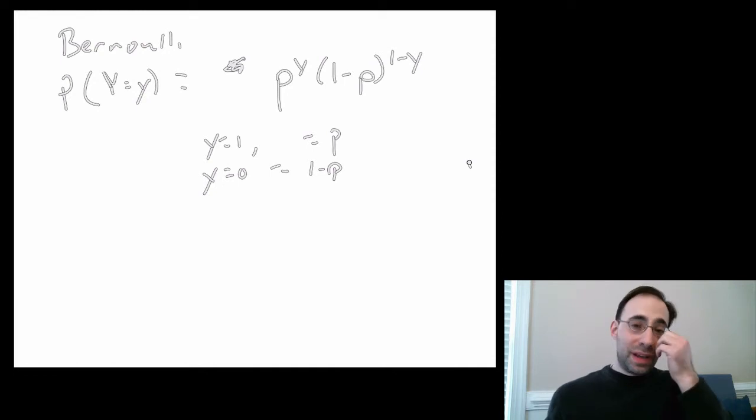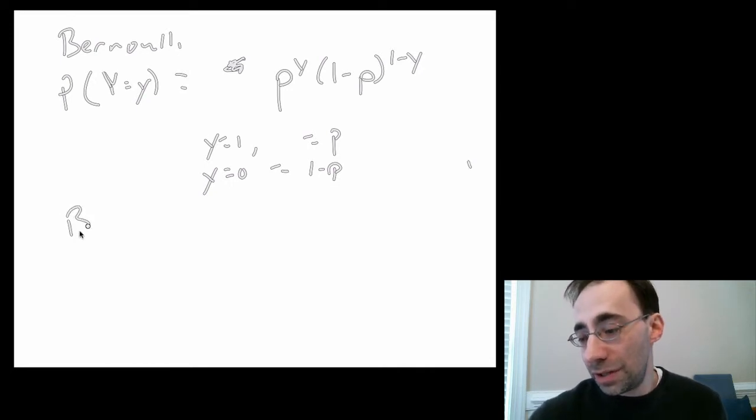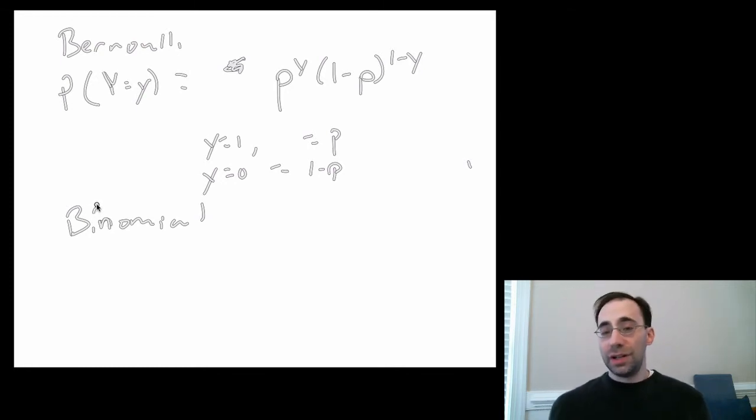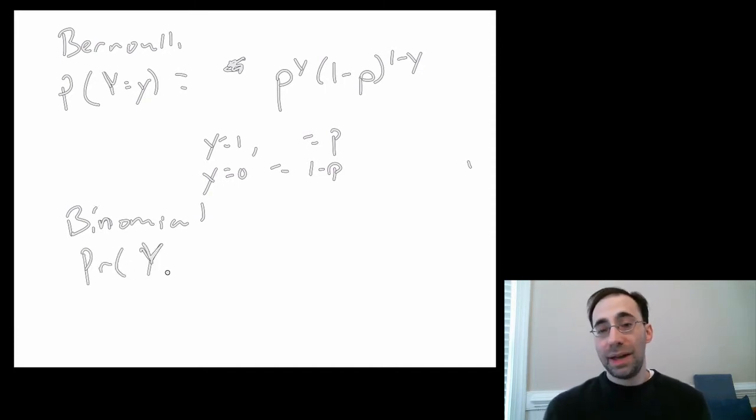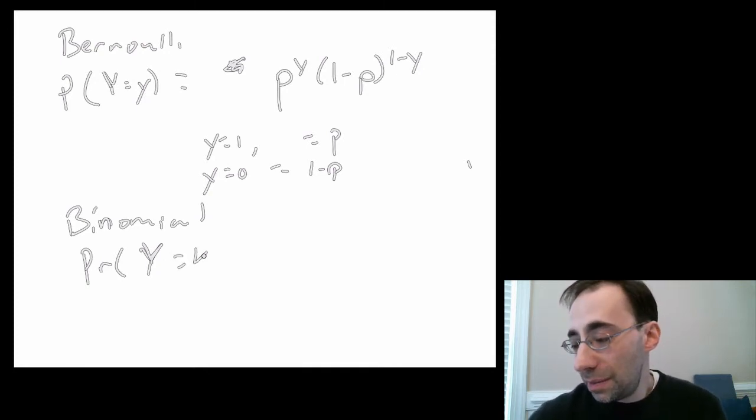The Bernoulli isn't used very often. Mostly it's used as the basis for the much more commonly used binomial distribution. And this is the one you saw a picture of earlier. The binomial distribution is for repeated trials.